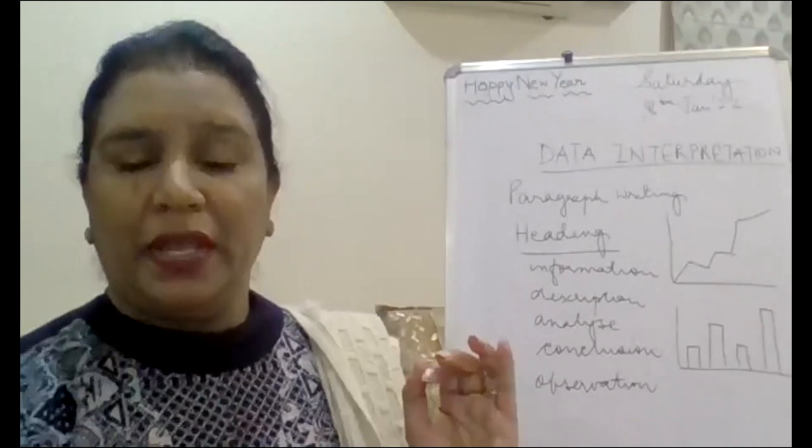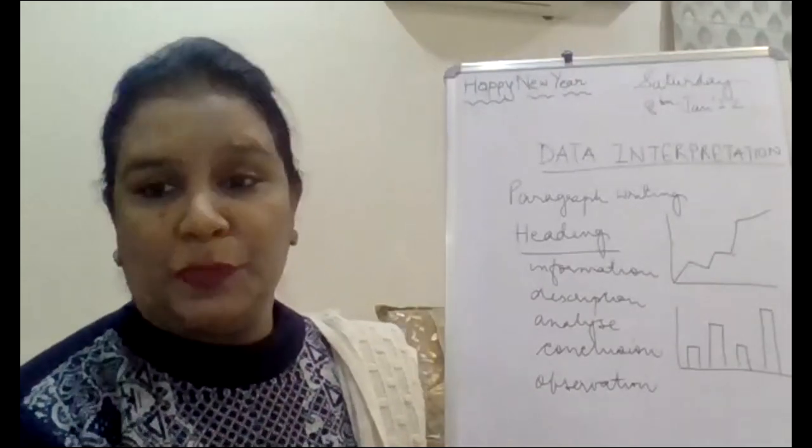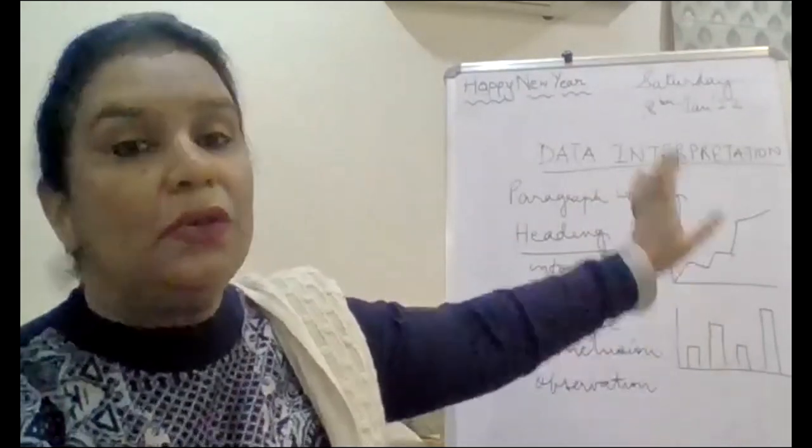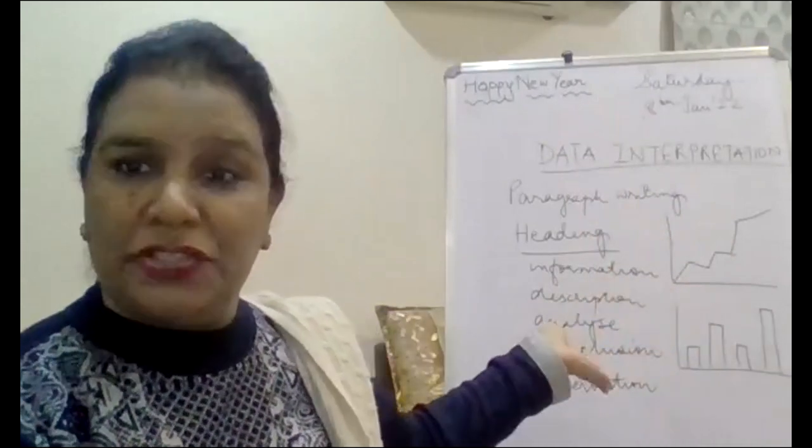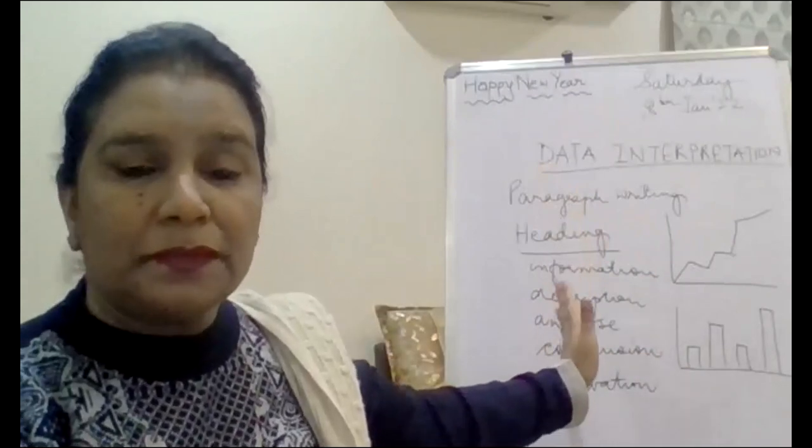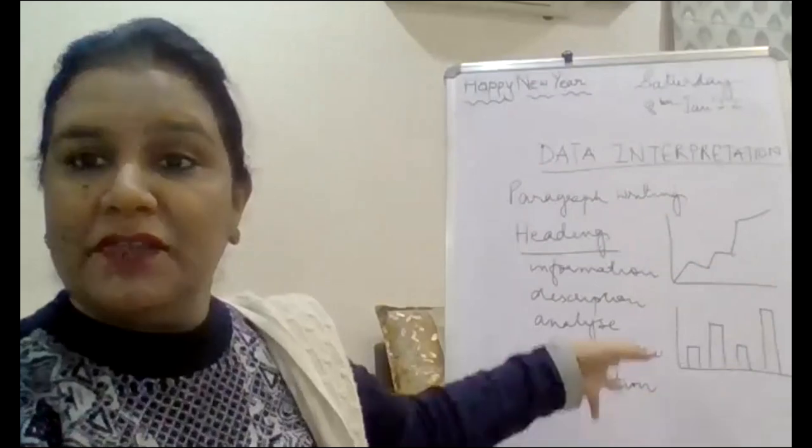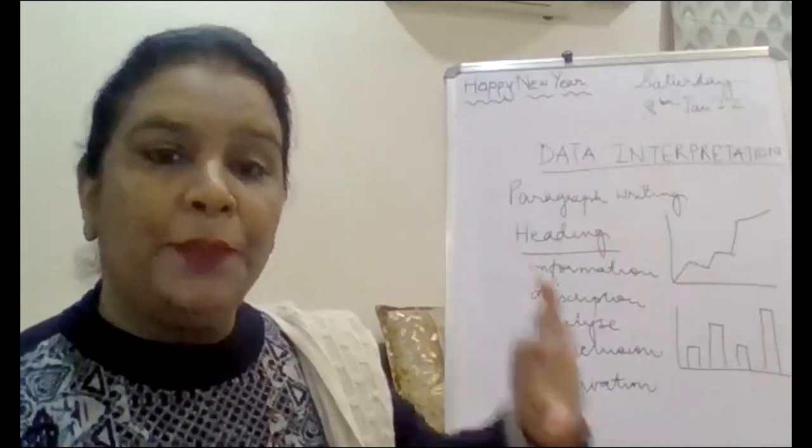Right. So, whenever we start off with a writing skill. What are we supposed to do? First of all, look at the content that is given to us. Look at the input that is given to us. Here we have in the form of pictures. So, it will be a visual input. It could be a report that is given. It could be a pie chart that is given. It could be some kind of statistics that are given. Okay.